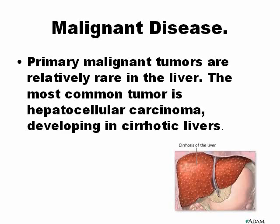Malignant tumors are rare in the liver itself — the liver, in general, receives metastatic cancer from other organs. The most common primary malignant tumor is hepatocellular carcinoma, which is related to cirrhotic liver — specifically alcoholic cirrhosis or sometimes chronic hepatitis.